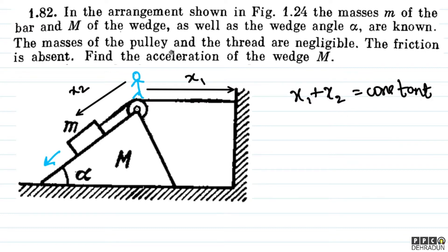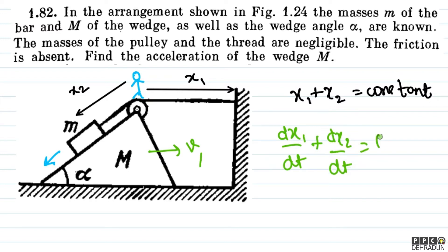If capital M is going right with speed v1, then dx1/dt + dx2/dt has to be equal to zero — since the total length is constant, its differentiation is zero. So dx1/dt equals minus v1 because x1 is decreasing, giving us minus v1 plus dx2/dt. Now x2 is the distance of the block measured with respect to ground, and the velocity v2 is the resultant of v1 vector plus v2 vector.